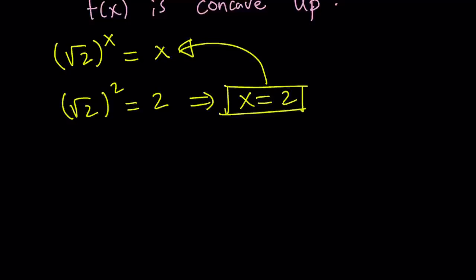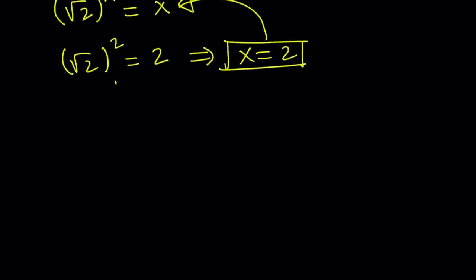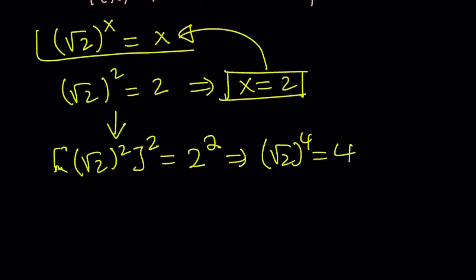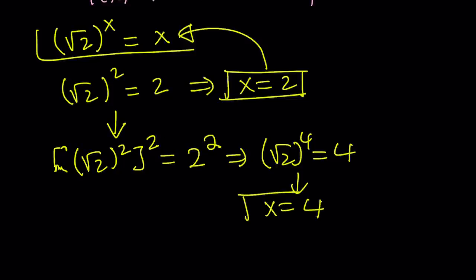And our claim was that there should be two intersection points, so where is the other one? We can actually generate the other solution from this one. So, take this equation and square both sides. So, I have square root of two squared. Don't simplify it. Square that again. And on the right-hand side I have two squared. Now, this gives us square root of two to the fourth power equals two squared, which is four. But this is our equation, remember? So, that tells us that x equals four is just another solution. Awesome. We got two solutions, and we're supposed to have two solutions, so we got it all, right? Great.